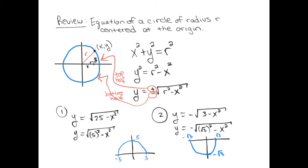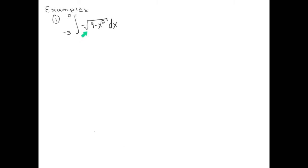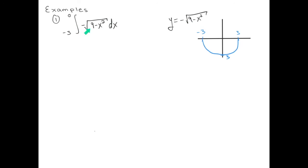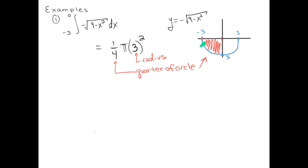Don't worry if your picture isn't perfect. Let's do an example of a definite integral. We're looking for the net area between the graph of y equals negative square root of 9 minus x squared and the x-axis from x equals negative 3 to x equals 0. This is the bottom half of a circle of radius 3. The region is a quarter circle. The area is a quarter of pi r squared, with r equals 3, giving 9pi over 4. Since the area is underneath the x-axis, the final answer is negative 9pi over 4.